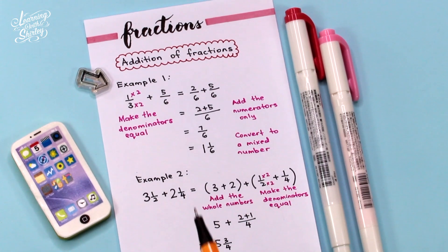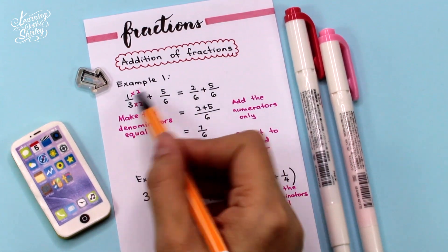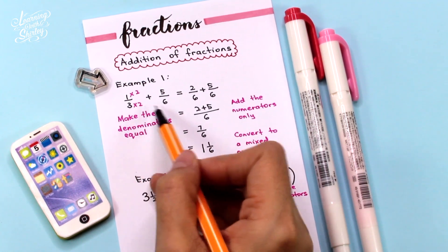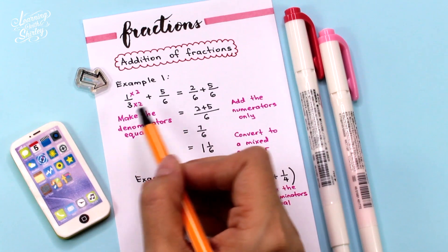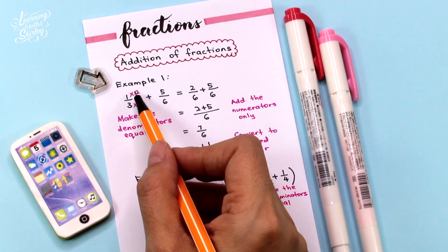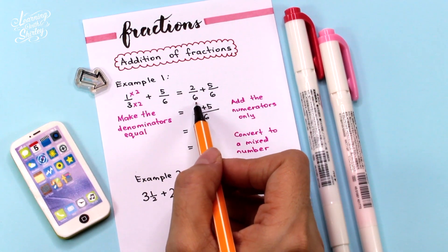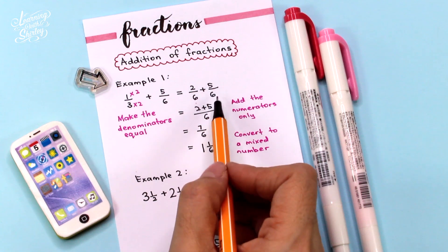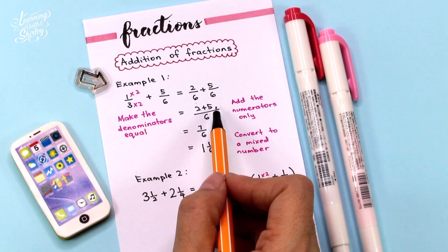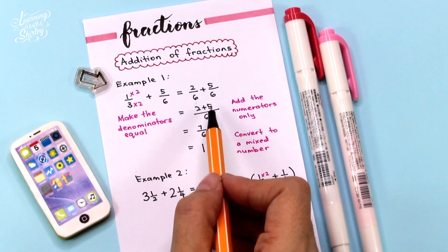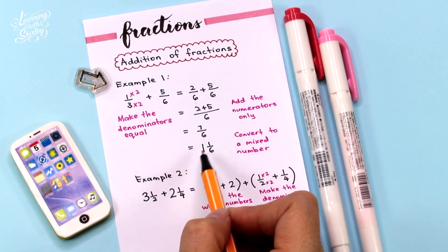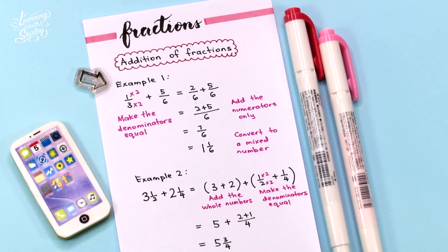How to add two fractions together? Example 1: 1 over 3 plus 5 over 6. First, we look at the denominators, which are 3 and 6. We have to make the two denominators equal, so we change 3 to 6 by multiplying top and bottom by 2, getting 2 over 6. Then 2 over 6 plus 5 over 6 — when denominators are equal, we add the numerators: 2 plus 5 equals 7, giving 7 over 6. Converting to a mixed number, the answer is 1 and 1 over 6.